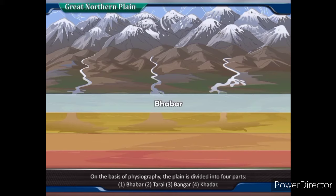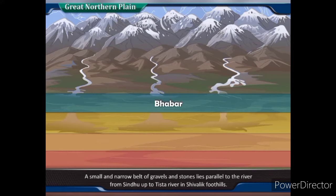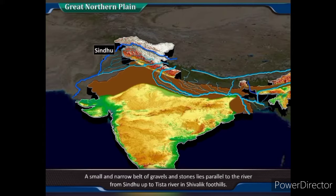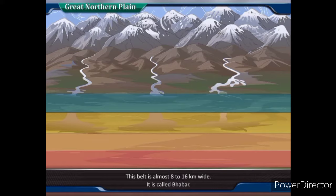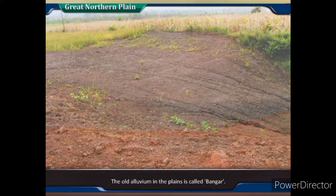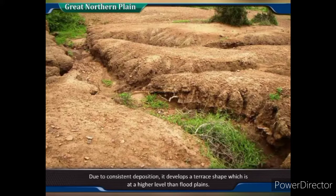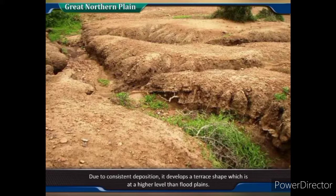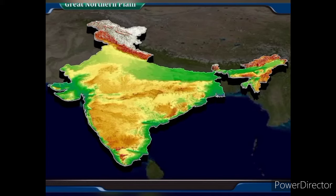On the basis of physiography, the plain is divided into four parts. A small and narrow belt of gravels and stones lies parallel to the river from Sindhu up to Tista river in Shivalik foothills; this belt is about 8 to 16 km wide and is called Bhabar. The Terai region, which is more humid and marshy, comes next — dense forests and diversified wildlife are seen here. The old alluvium in the plains is called Bangar; due to consistent deposition, it develops a terrace shape at a higher level than flood plains. The new sediment of the flood is called Khadar.